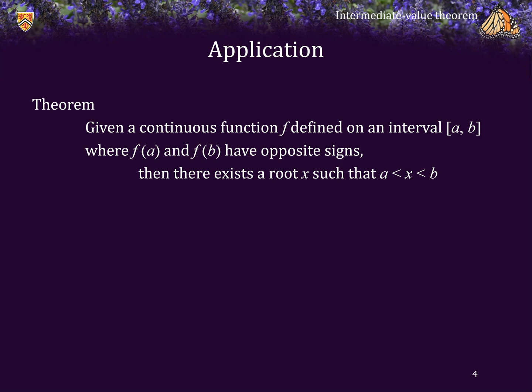For example, given a continuous function f defined on an interval [a, b] where f(a) and f(b) have opposite signs, then there exists a root x such that x is between a and b, and therefore the interval [a, b] has a root of the function f.